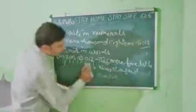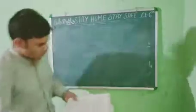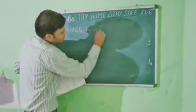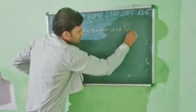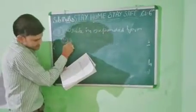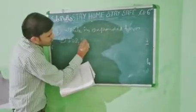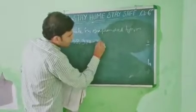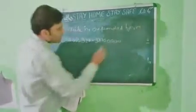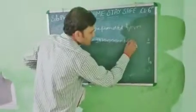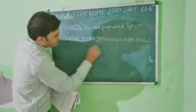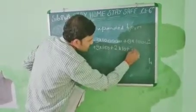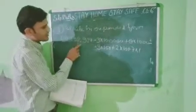Question number three: Write each of the following numbers in expanded form. For example, 3,08,927 in expanded form is: 3 × 1,00,000 plus 0 × 10,000 plus 8 × 1,000 plus 9 × 100 plus 2 × 10 plus 7 × 1.